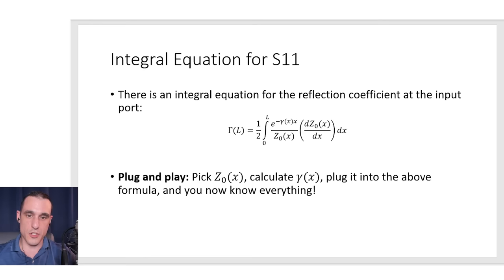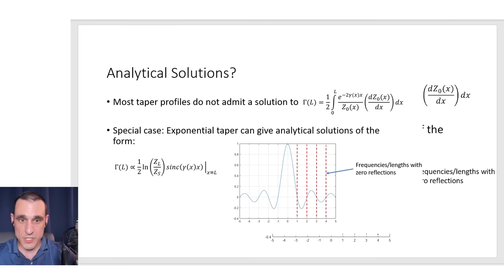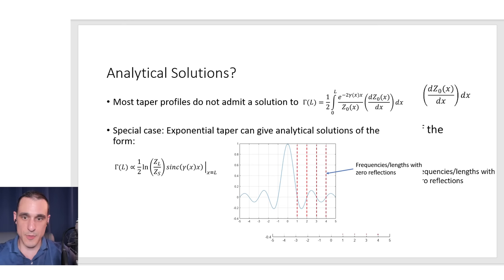The next obvious question is: are there any impedance profiles Z(x) that give you closed-form analytical solutions? As it turns out, there aren't very many. Most taper profiles do not give you a solution to this integral — instead you have to evaluate numerically or with special functions, which is mathematically intense. There is a special case: the exponential taper. In the case of an exponential taper, you can get an analytical solution in a sinc function form. If you look at this form, there are specific values for the argument in this sinc function where the reflection coefficient is equal to zero.